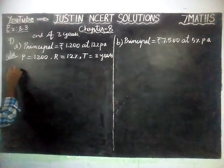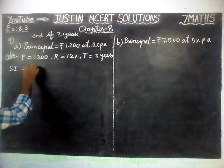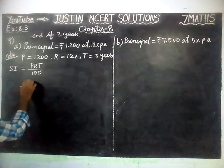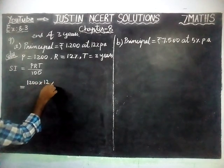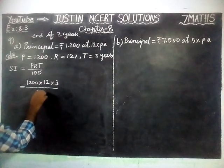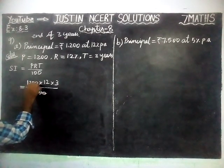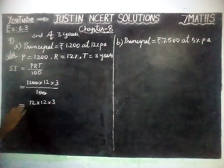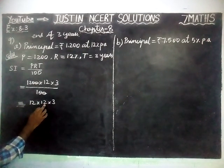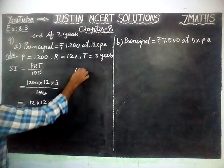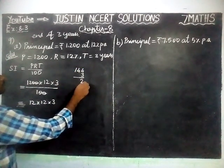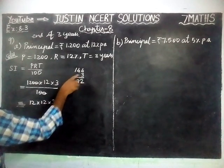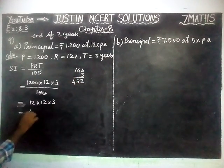First we are going to find the Simple Interest. Simple Interest is equal to PRT divided by 100. P is equal to 1200, Rate of Interest is equal to 12, Time is equal to 3 years, divided by 100. Cancelling two zeros, we get 12 into 12 into 3. That gives 144 into 3, which equals 432.